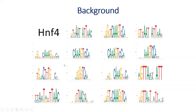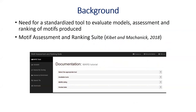The main challenge arises whereby each of these tools actually gives out a different version of the motif for the same transcription factor. Here is just a picture to show different variants of the HNF4 transcription factor generated by the different algorithms. This presents a researcher with a dilemma on finding which one is the best motif for a given transcription factor. So with this challenge, in 2018, Kibet and Mechanic developed a tool — Motif Assessment and Ranking Suite — with the whole aim of evaluating these motif models, assessing them, and ranking them to find biologically relevant motifs.